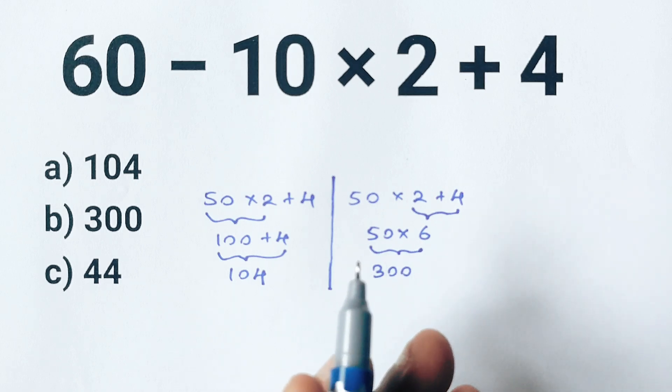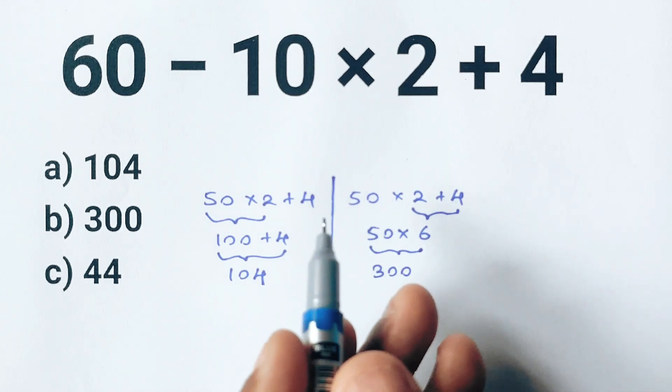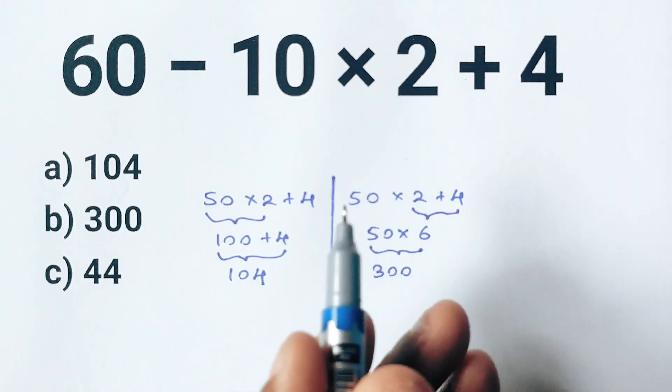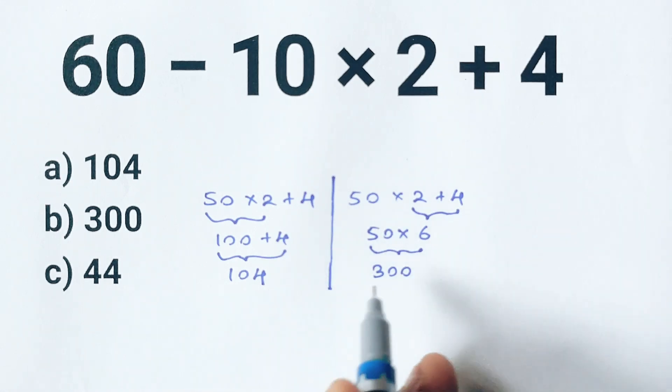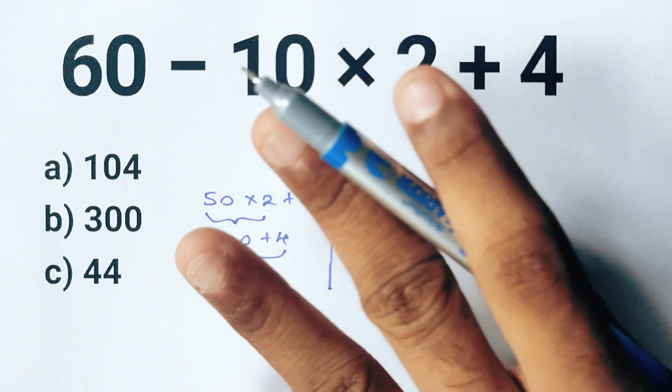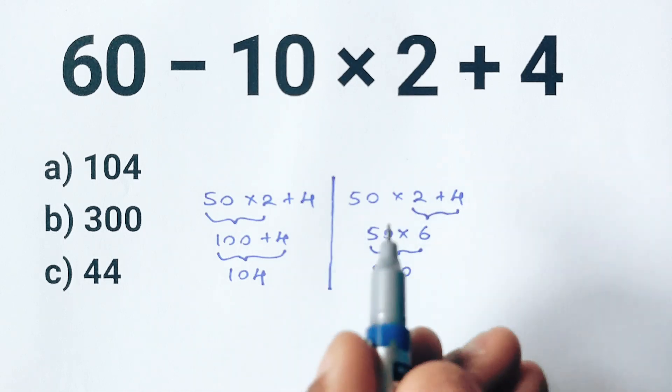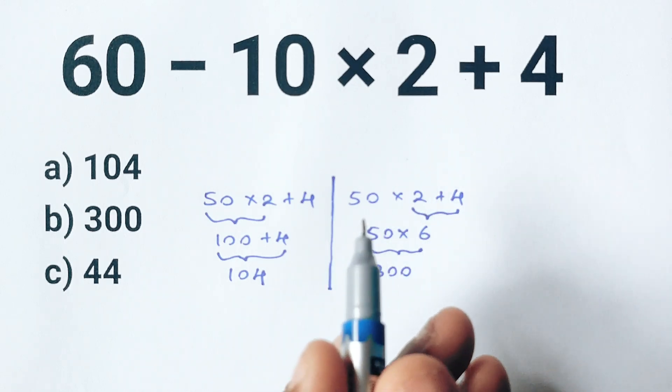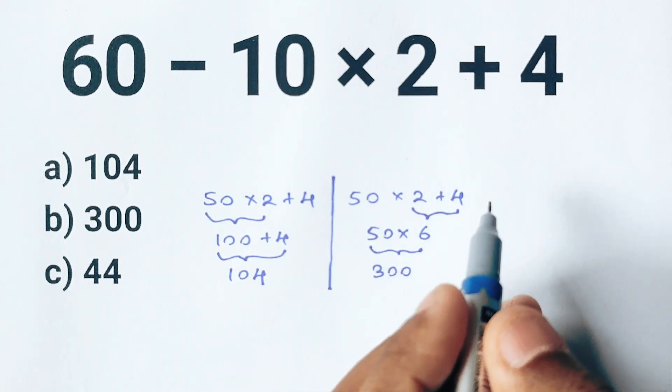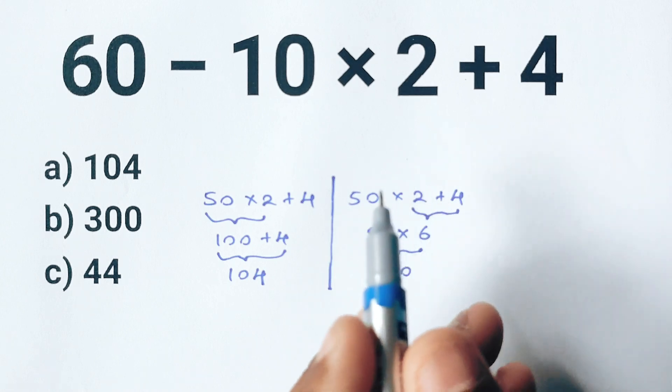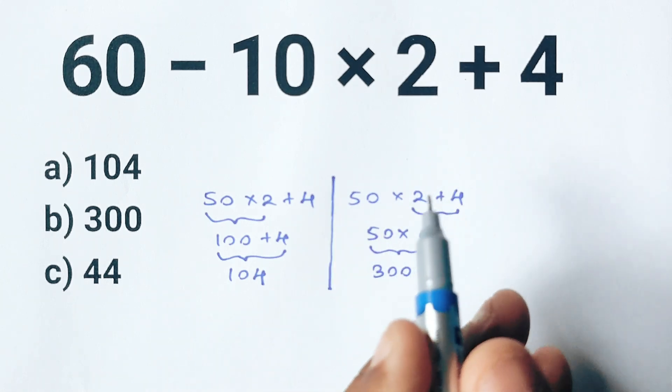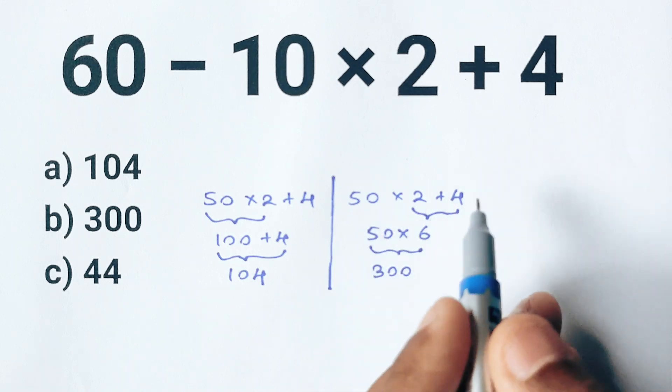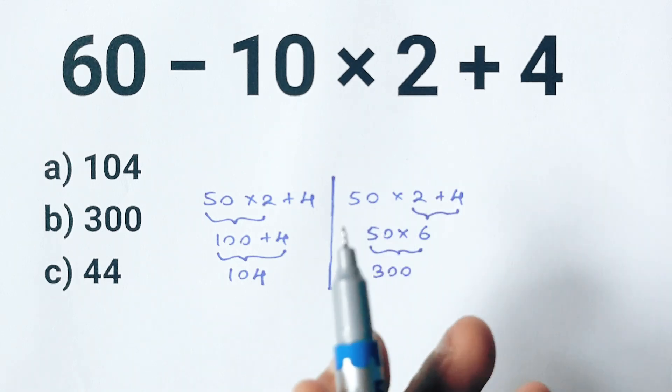So just like before, we have taken the exact same expression, but by solving it in two different ways we got two completely different answers: 104 and 300. And that's not okay in math. In mathematics, every expression like this should have only one correct answer, and that's why we have something called the order of operations. It tells us the exact steps to follow so we all end up with the same answer every time.